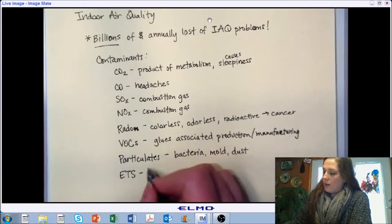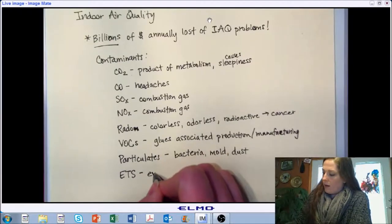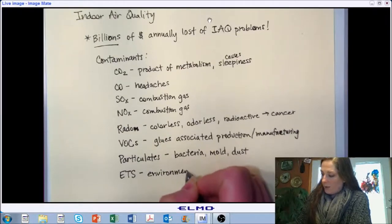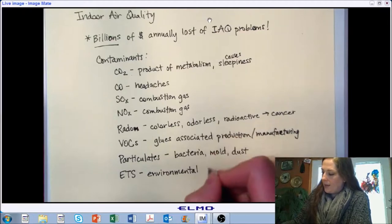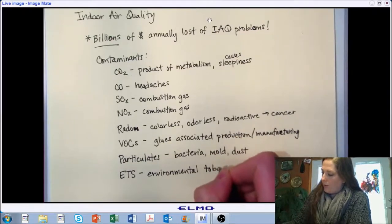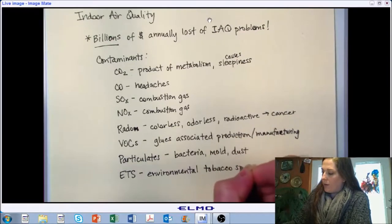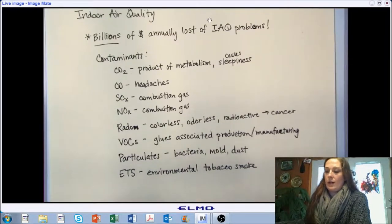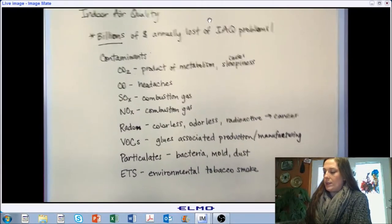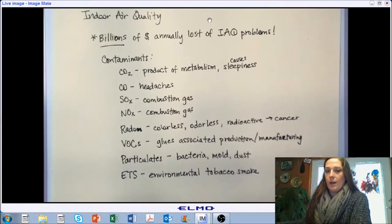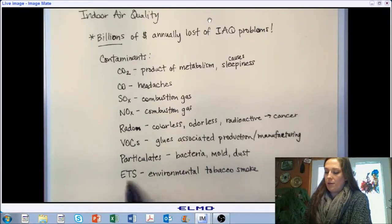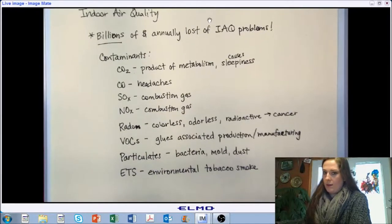Depending on the state that you live in, ETS — environmental tobacco smoke — has had a lot of action taken against it. In many states, and in all federal buildings, it's now prohibited to smoke within the building, and in many cases even within so many feet of the door. This is one that has had a lot of public awareness in recent years.